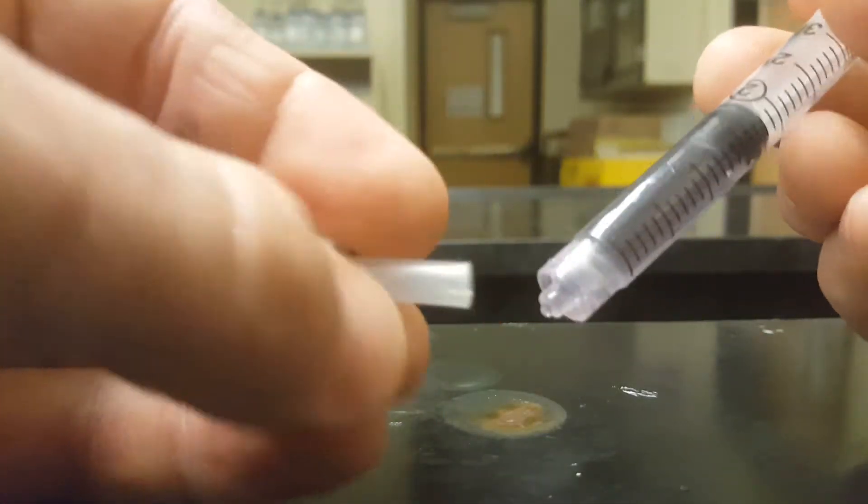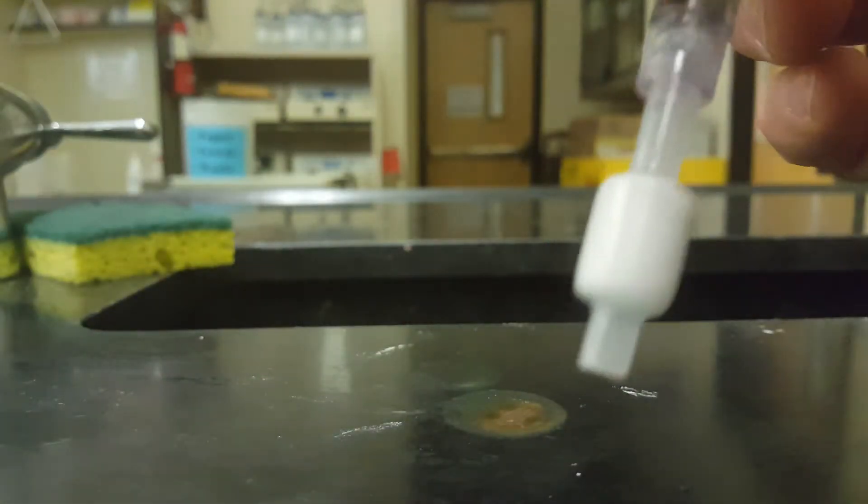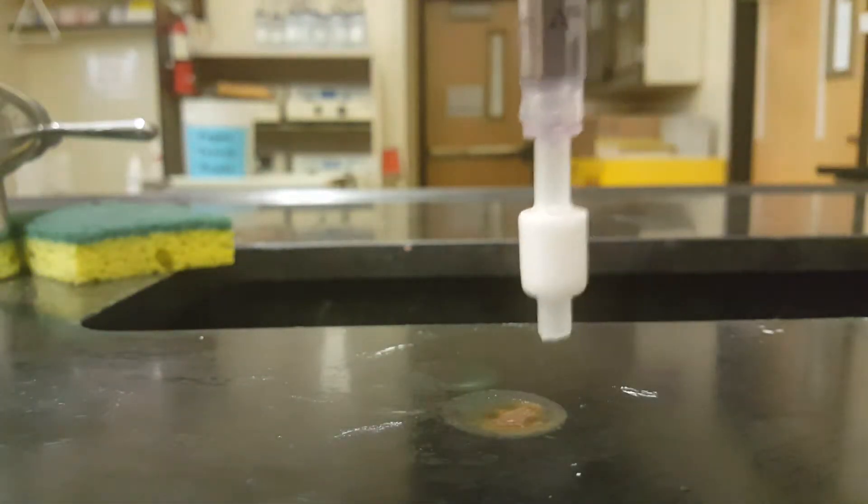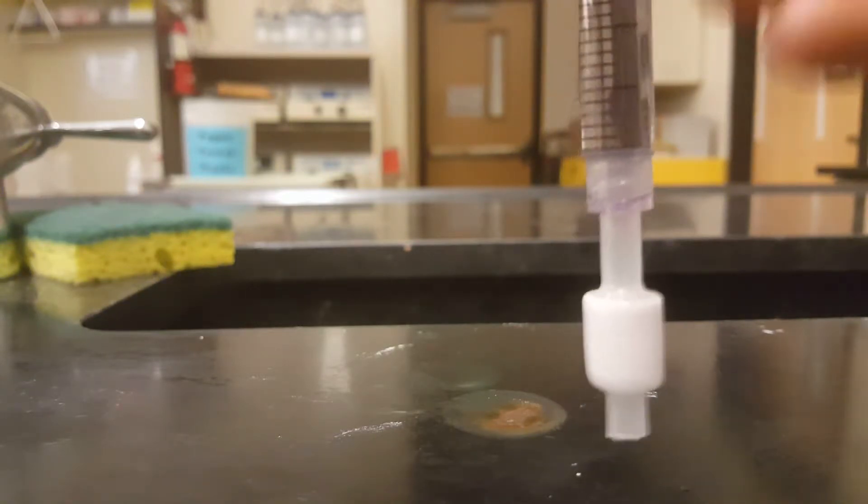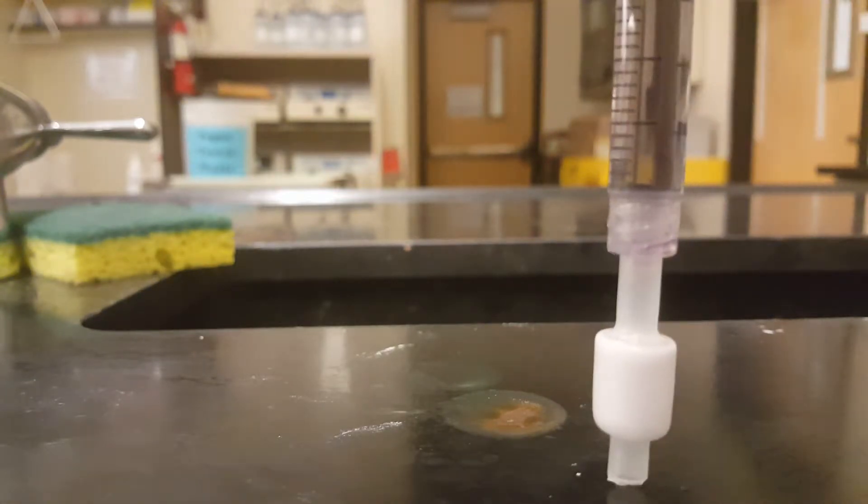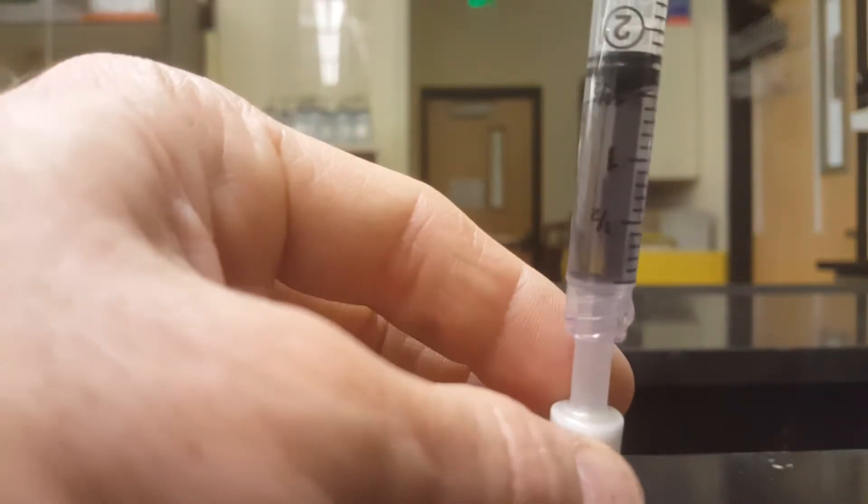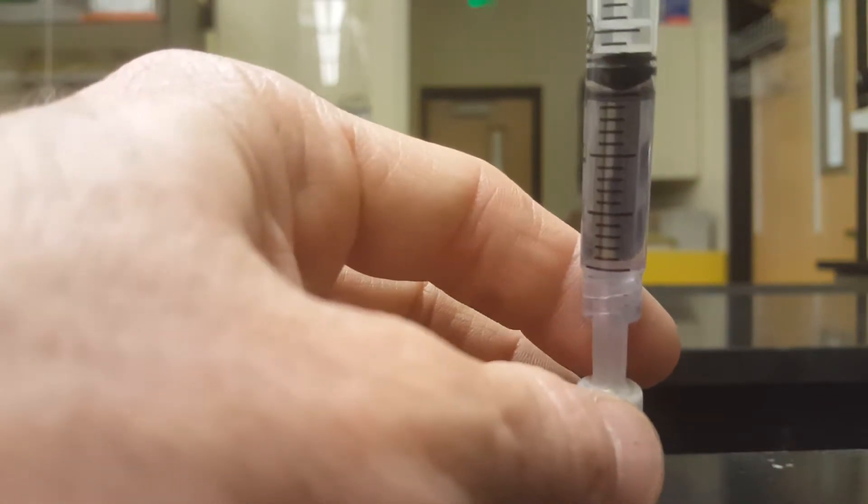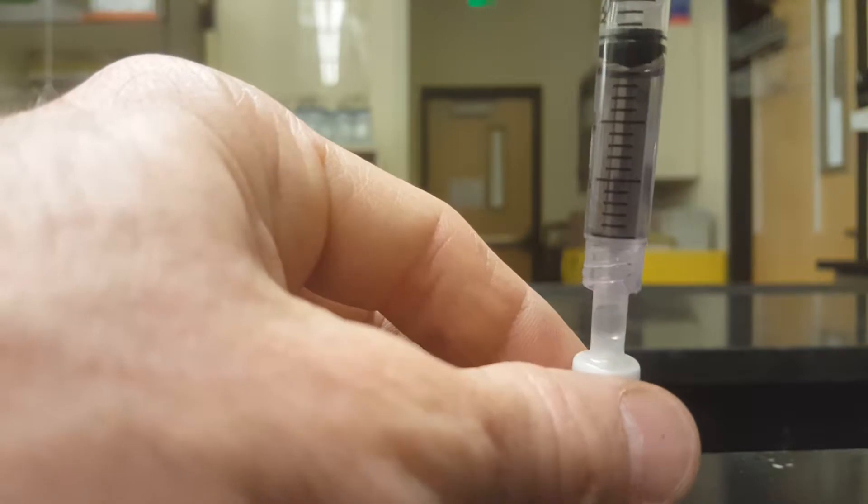To load your sample, you want to take your syringe and insert it into the long end of your cartridge. And you want to keep an eye on the level change of your plunger. So the plunger, when you are loading your sample in, should move one milliliter.